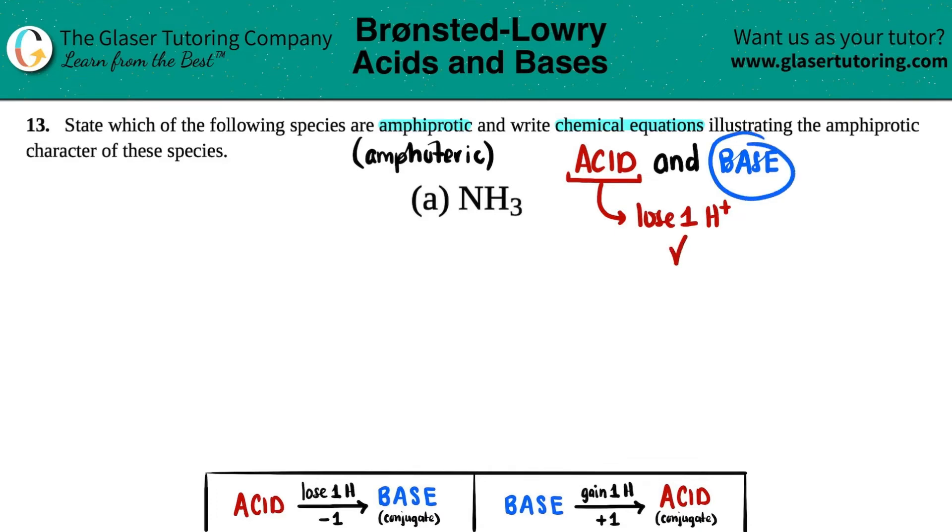Now we have to figure out if it can act as a base. Bronsted-Lowry bases will gain the one H+ that the acid - whatever acid is in solution - will donate. Generally speaking, you could figure out if this is going to act as a base by looking at the charges. If you see a negative charge, that's going to be a base.